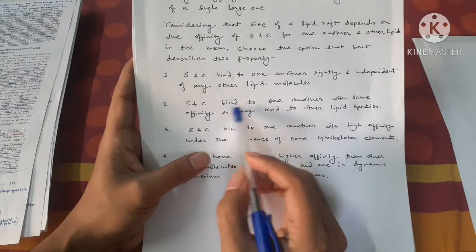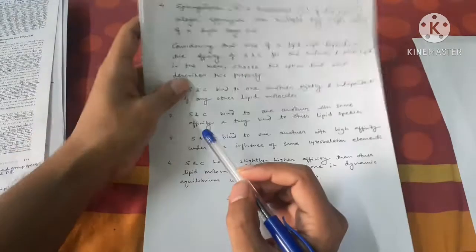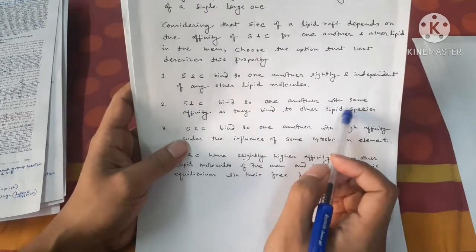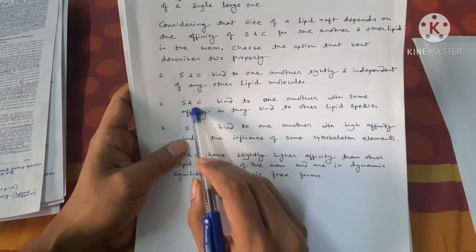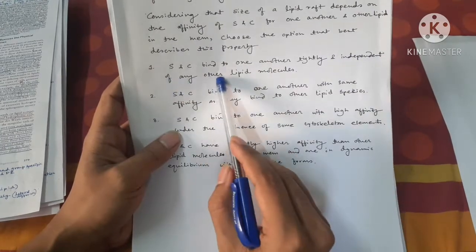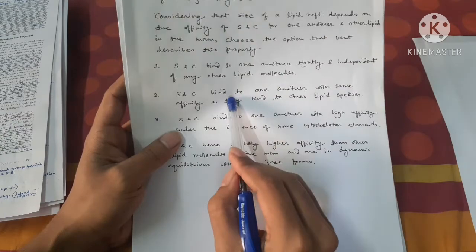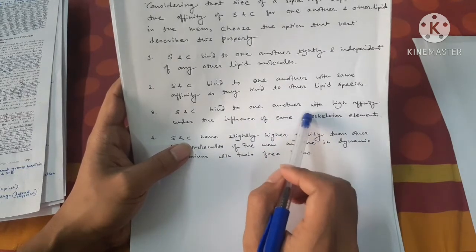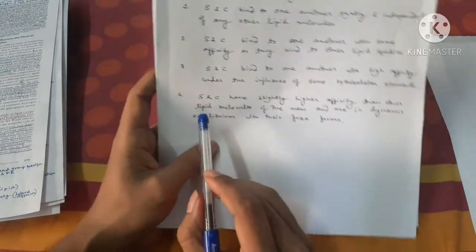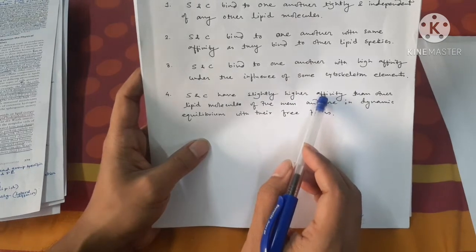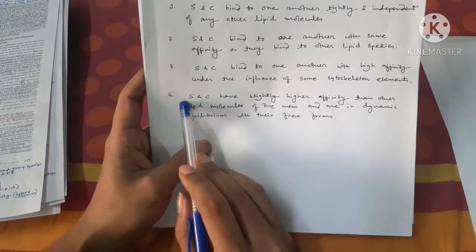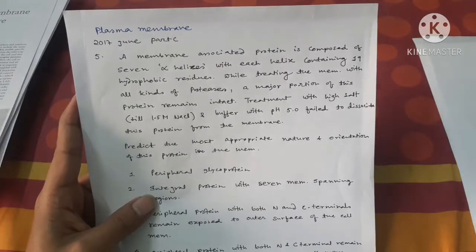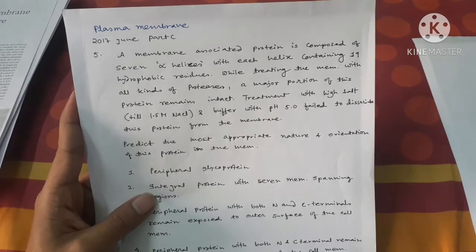Option two is: sphingolipids and cholesterol bind to one another with the same affinity as they bind to other lipid species — this is wrong because they actually bind with high affinity. Option three: they bind under the influence of cytoskeletal elements — also not true, as there is no need for cytoskeletal elements in the case of phospholipids. The correct answer is option four: sphingolipids and cholesterol have slightly higher affinity than other lipid molecules and are in dynamic equilibrium with their free form.